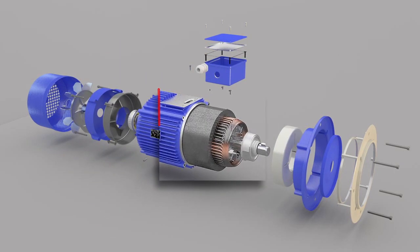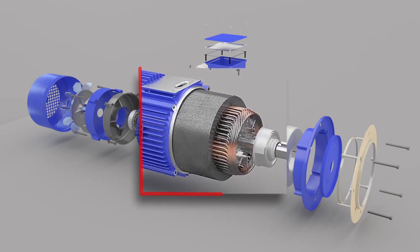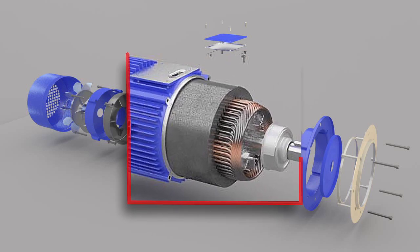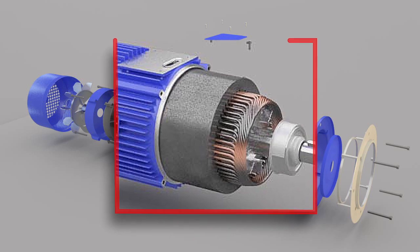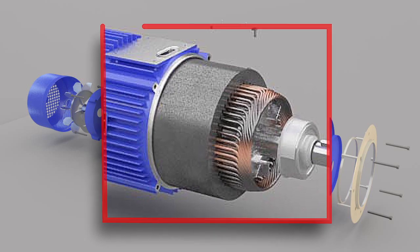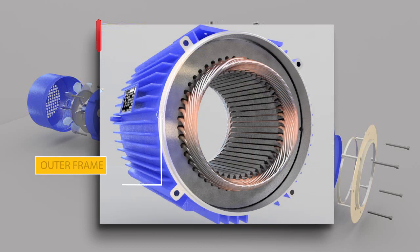The stator is built up of high grade alloy steel laminations to reduce eddy current losses. It has three main parts, namely outer frame, the stator core and a stator winding. Outer frame is the outer body of the motor. Its main function is to support the stator core and to protect inner parts of the machine.